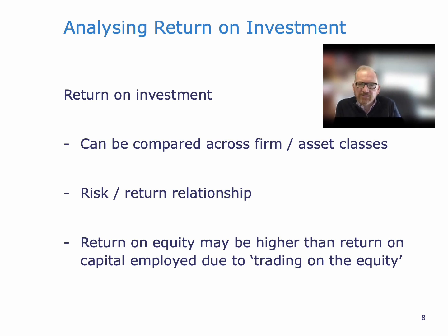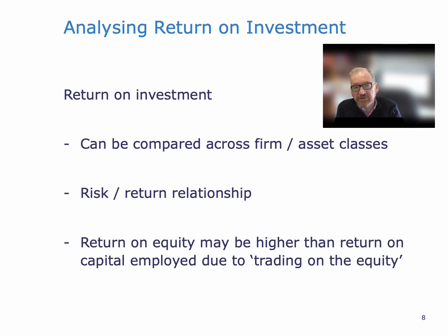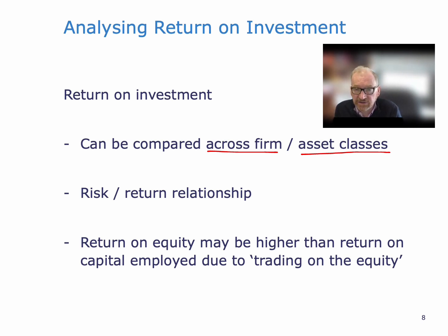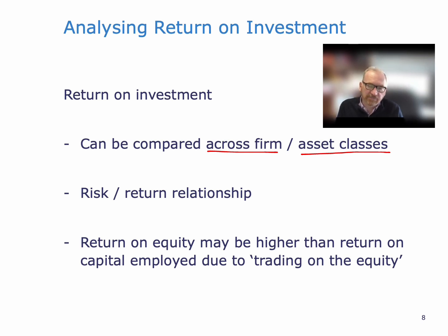Analyzing returns on investment: return on investment is different from the other ratios in that it can be compared across different firms and different asset categories. We can look at how much profit the firm is generating relative to its resources and compare between firms. It's sensible to ask whether an airline has a higher return on investment than a supermarket or a manufacturing company. You can even say: I'm making a return of 5% in this company, versus only half a percent in the bank or 2% in property — so you can compare across asset classes as well.